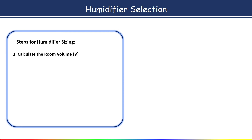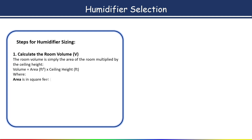The first step is to calculate the room volume in cubic feet. The room volume is simply the area of the room multiplied by the ceiling height. You will get the area from the architect drawing using the list command or area command from the floor plan layout. The ceiling height you will get from the section or elevation drawing. Calculate the area in square feet and ceiling height in feet to get the volume in cubic feet.